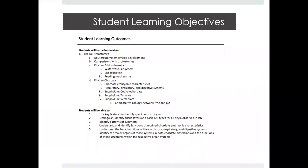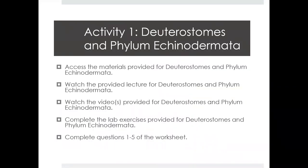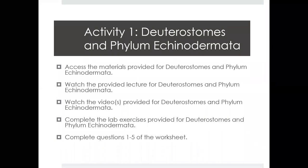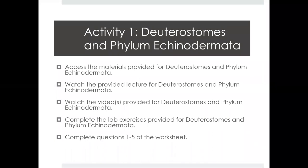Take a moment, pause the video and take a look at the student learning objectives. You should be pretty familiar looking over these key points that we want you to take away from this lesson. I'm going to go ahead and dive right into deuterostomes. Activity one is going to focus on deuterostomes and the phylum Echinodermata. As I'm going through this material, be sure that you're watching the videos, looking at the material provided on As You Learn, and going through the handouts as well, and then you can take a crack at your worksheets.